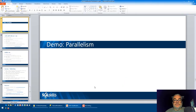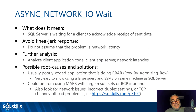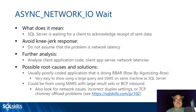Async network IO: the word people fixate on is 'network,' but most often it's not a networking issue. It's either the client code processing rows inefficiently — row-by-agonizing-row — using multiple active result sets, or the client application server running slowly. Async network IO means SQL Server sent a packet of data to the client and is waiting for the client to acknowledge and ask for more. If client-side issues are ruled out, then check for actual network problems.